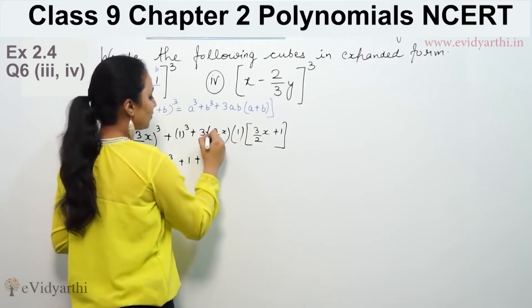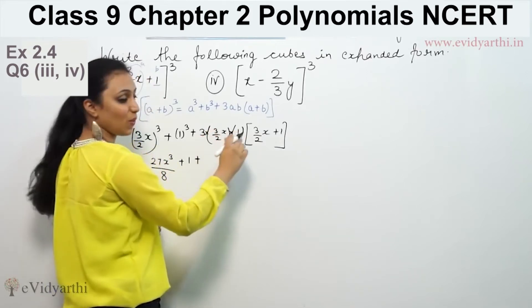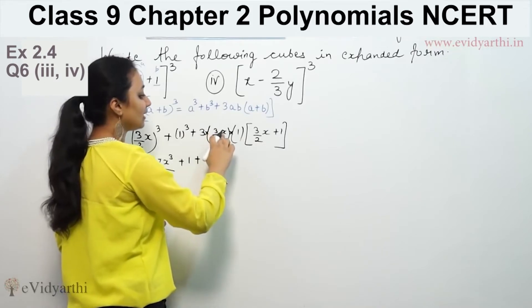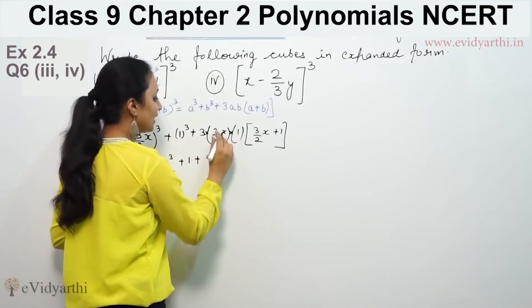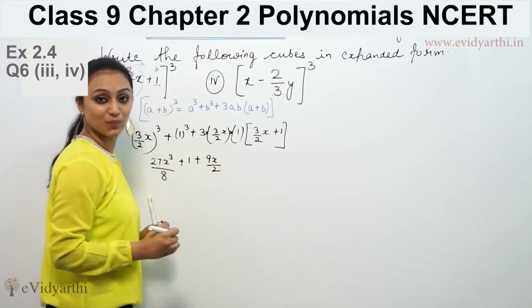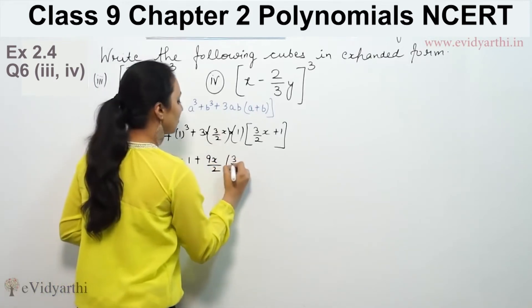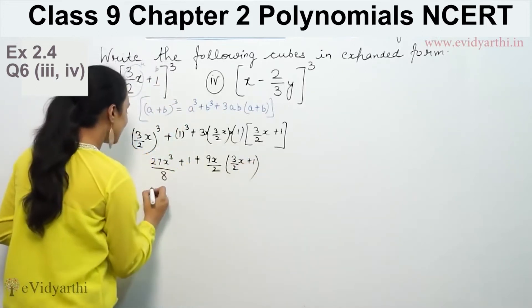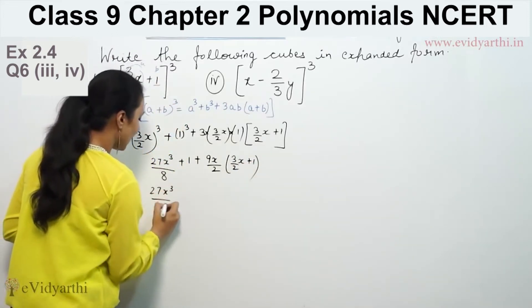Plus these 3 are multiplication: 3 × (3/2x) × 1. We multiply the numerator, 3 × 3 is 9, times 1 is 9, with x in bracket 3/2x + 1.